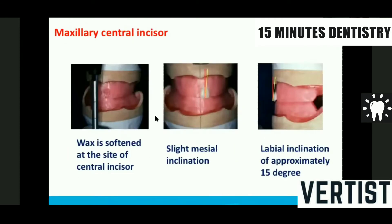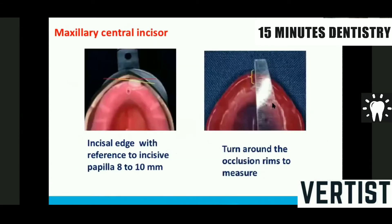When we start arranging, we soften the wax sufficiently in the central incisor region, do not disturb the midline, and place the central incisor with slight mesial inclination. It should be seen from the profile view that it is slightly anteriorly inclined — about 15 degrees. And it should be placed 8–10 mm from the incisor papilla.